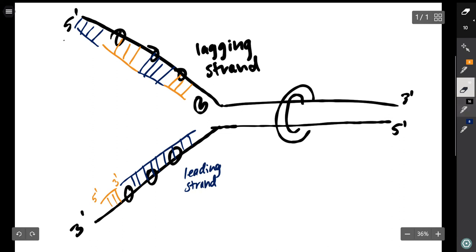DNA polymerase 1 will then come in and remove the RNA primers and replace them with DNA.